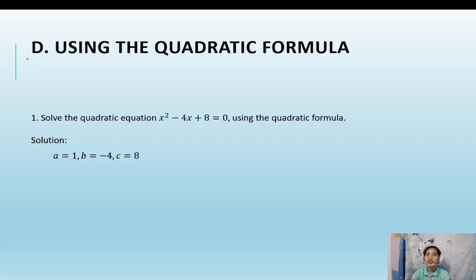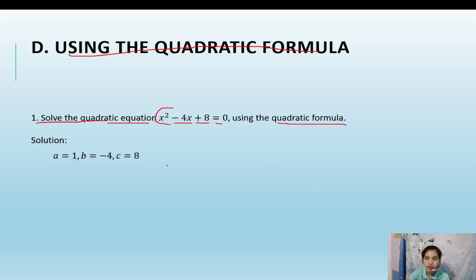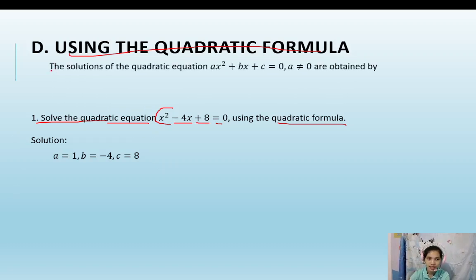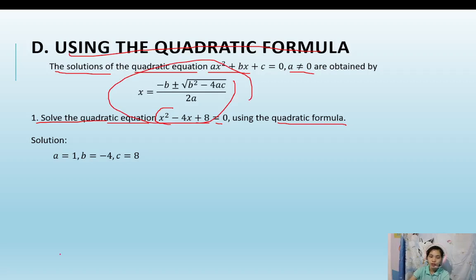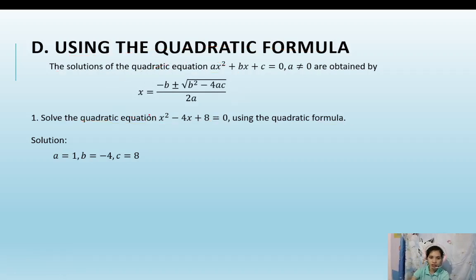Now let's have the last method: the quadratic formula. To solve quadratic equations using this formula, we substitute the values of a, b, and c. The quadratic formula is: x equals negative b plus or minus the square root of b squared minus 4ac, all over 2a.